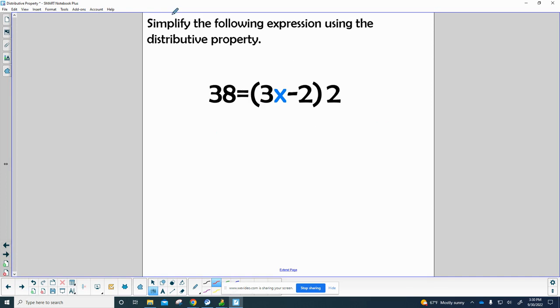Let's go on to the next one. We got 38 equals 3x minus 2 times 2 on the back side, so we're going to multiply 2 by each of these numbers. That would give us 6x minus 4 on the right side and 38 on the left side. When we start simplifying, we start out by adding 4 to both sides.